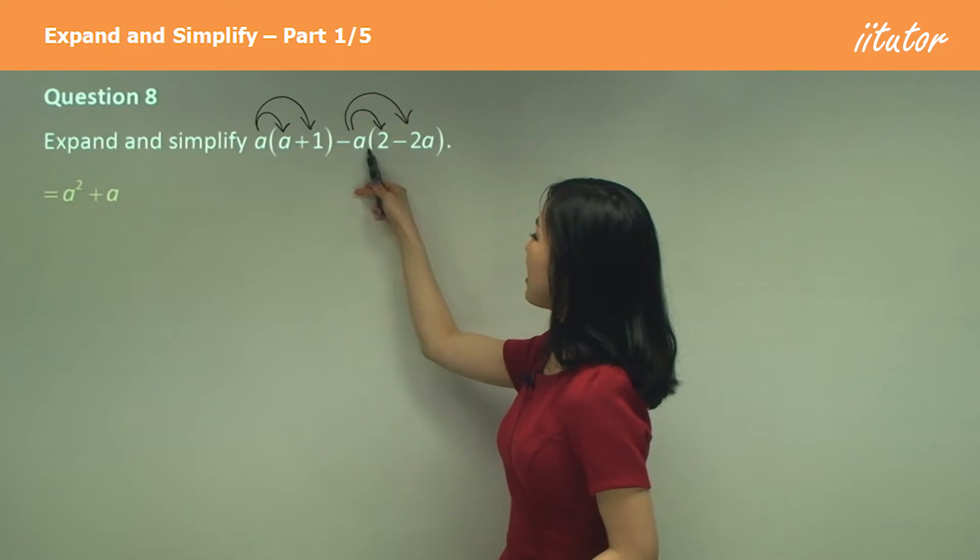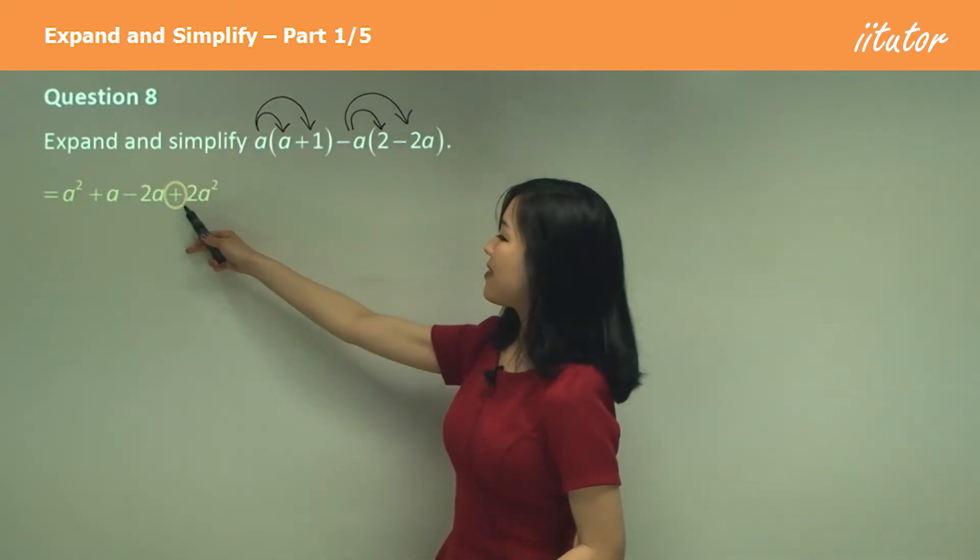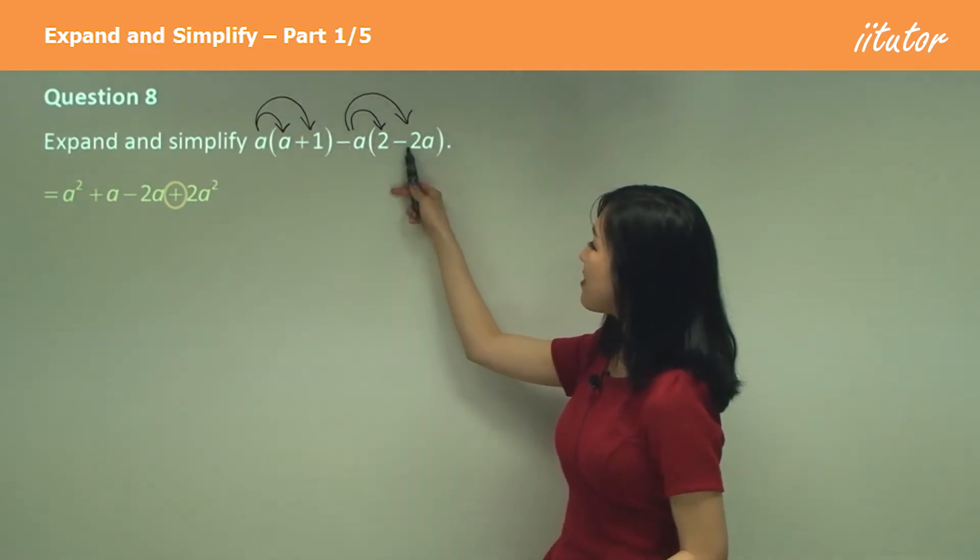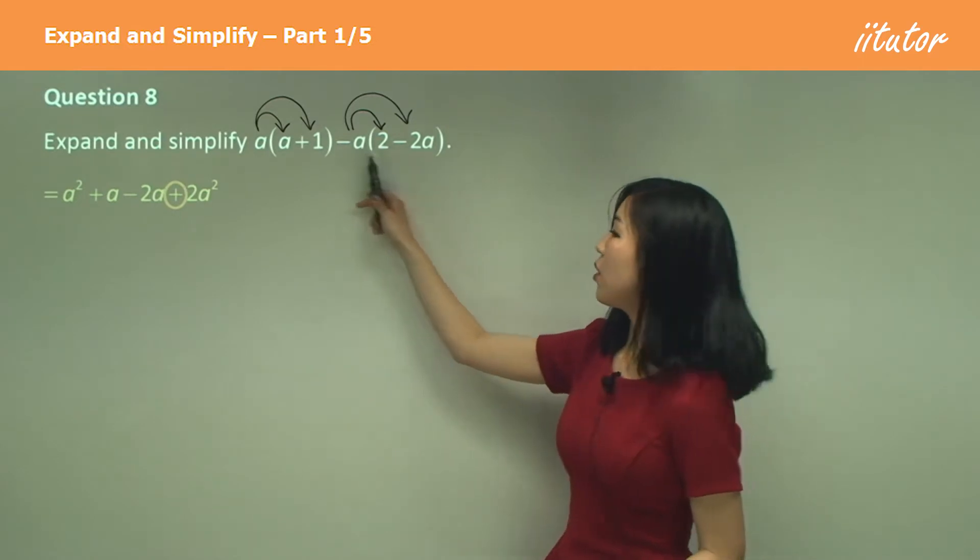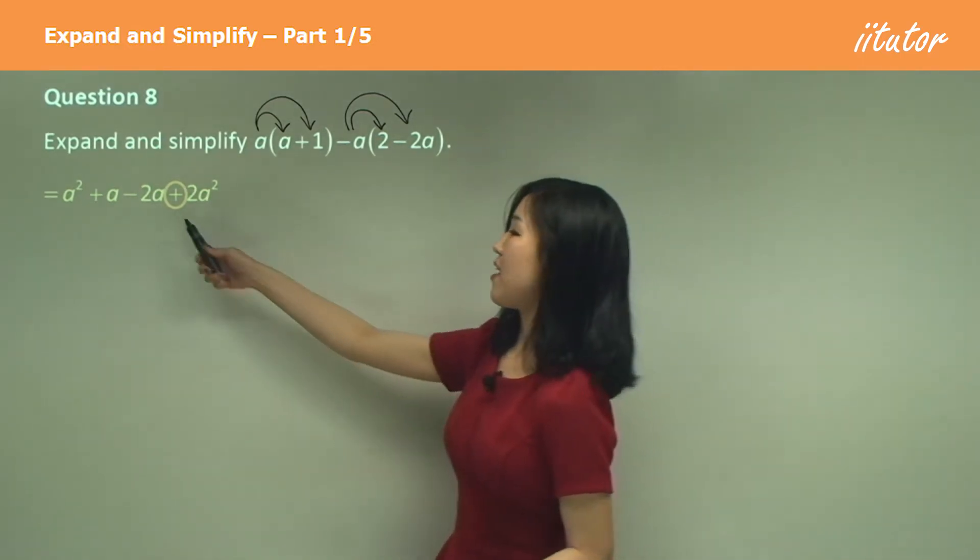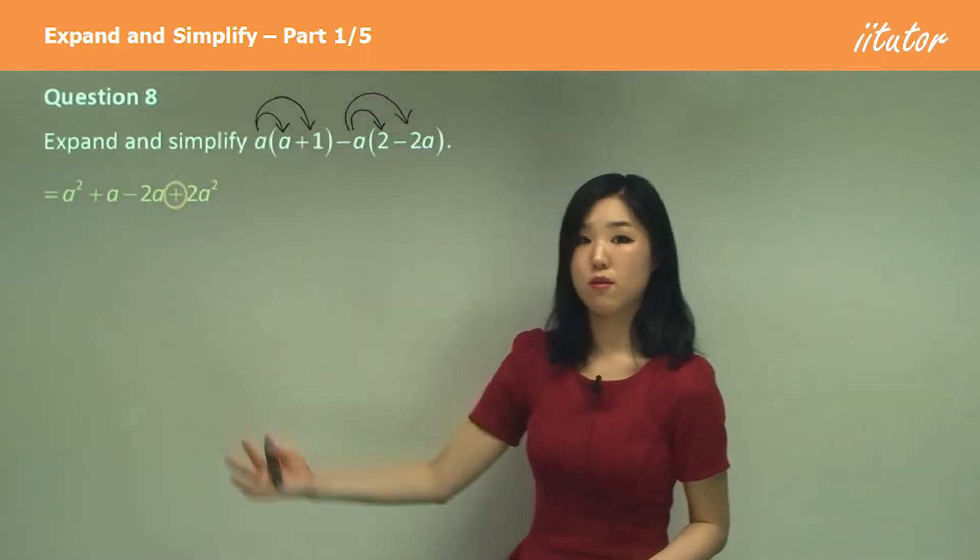Now here negative a times 2 is negative 2a, but see here I changed the sign to a positive because look, negative a times negative 2a. What's negative negative? It's positive. So that's why I changed it to a positive and so many students forget to make this into a positive in their exam.